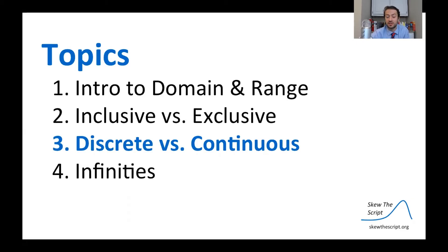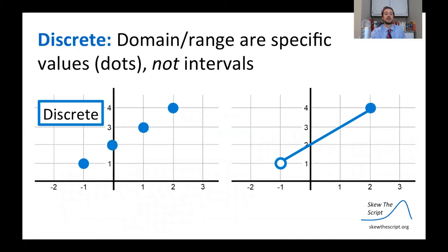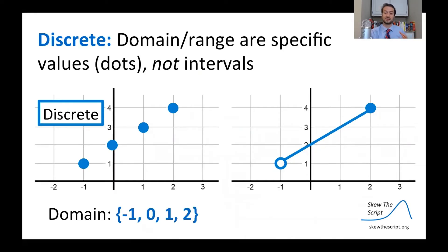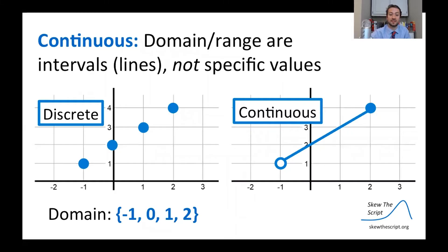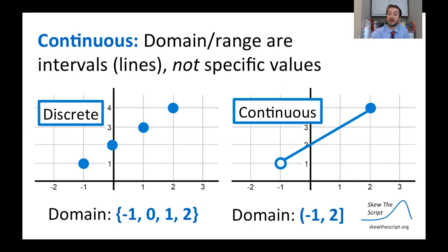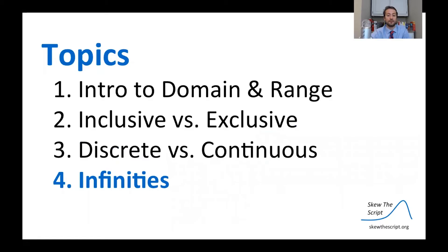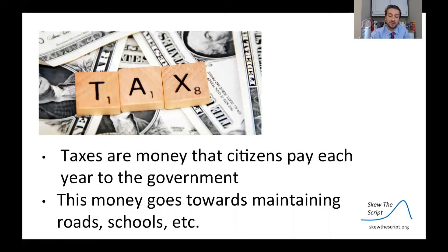Now let's talk about discrete and continuous functions and how that relates to domain and ranges. A discrete function on the left has just a bunch of discrete points — the domain is clearly defined as just four values: negative one, zero, one, and two. A continuous function on the right has a range of values instead of specific values, with a domain from negative one to two. Note that the left endpoint is exclusive — an empty circle and a parenthesis. Finally, we can extend to infinity, which means beyond all bounds, and we'll discuss those more in the context of taxes.